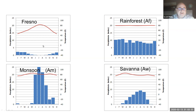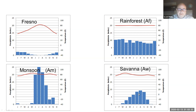Here's just another quick comparison. We have Fresno, and if you look at the amount of rainfall, tropical locations get quite a bit more. Even the driest of them, the savannas, get a bit more than Fresno, but the patterns by season are different.